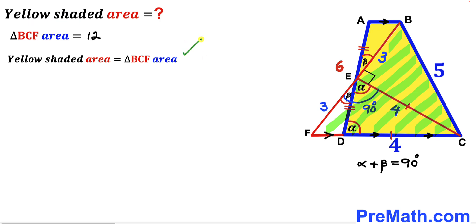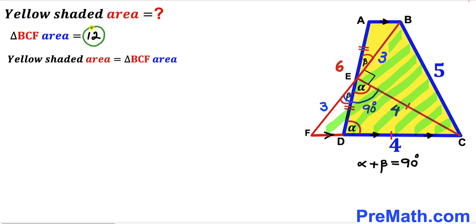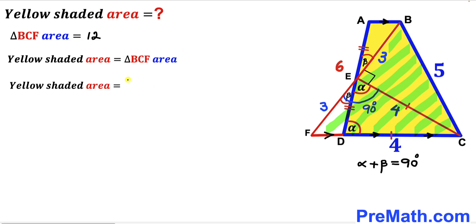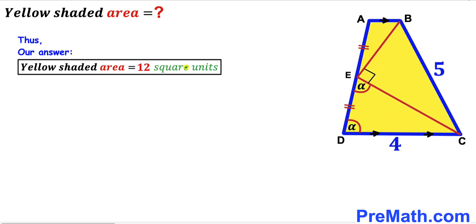Here's our final step. The yellow shaded region area equals the area of triangle BCF, which we determined is 12 square units. Substituting that value, we conclude that the yellow shaded region area is 12 square units. After all calculations and manipulations, the area of this yellow shaded quadrilateral is 12 square units — that's our final answer. Thanks for watching and please don't forget to subscribe to my channel for more exciting videos. Bye!